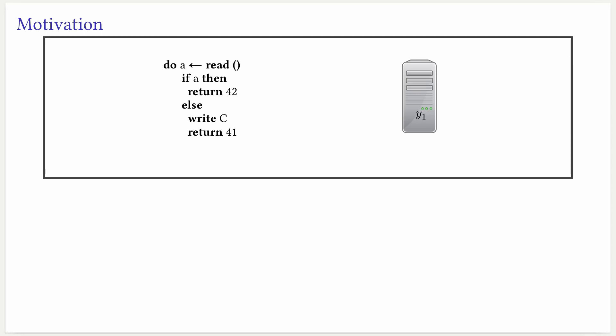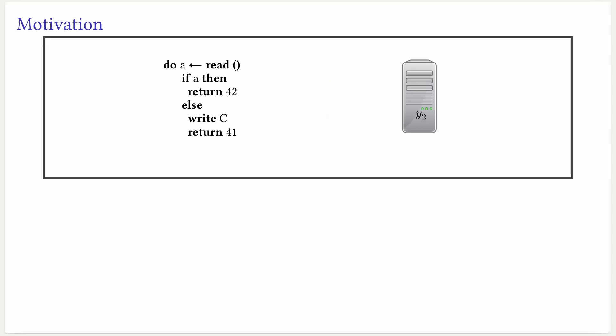It will continue executing, but for that it needs to perform the effect write C. It will make a request again to the server. The machine will process this request and then give back the control to the computation. The computation will finish with 41. In the end, this execution stops with result 41 and y2, which are the value returned by the computation and the final state of the machine on the right. We model this situation as follows.